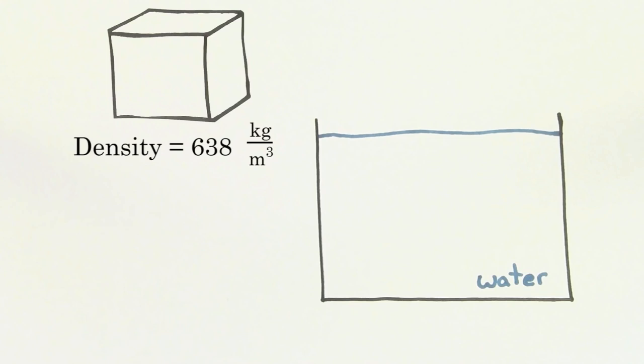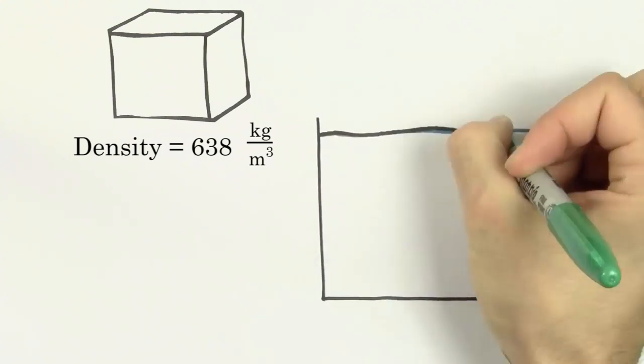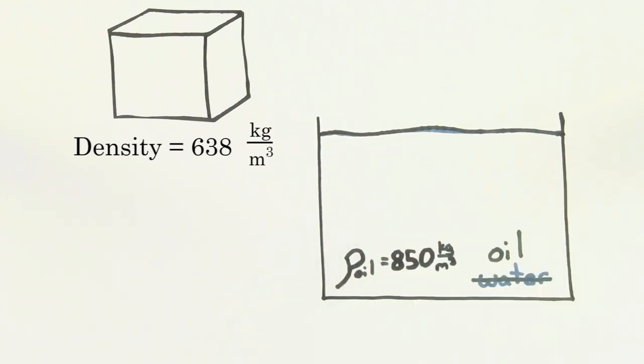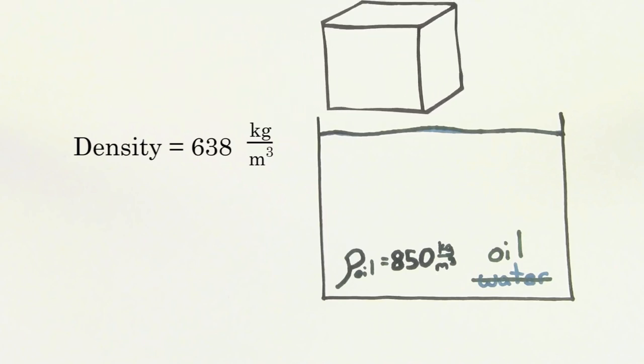For instance, if you were to let some wood of density 638 kilograms per meter cubed float in oil that has a density of 850 kilograms per meter cubed, you could still find the percent of the wood that's submerged underneath the oil.